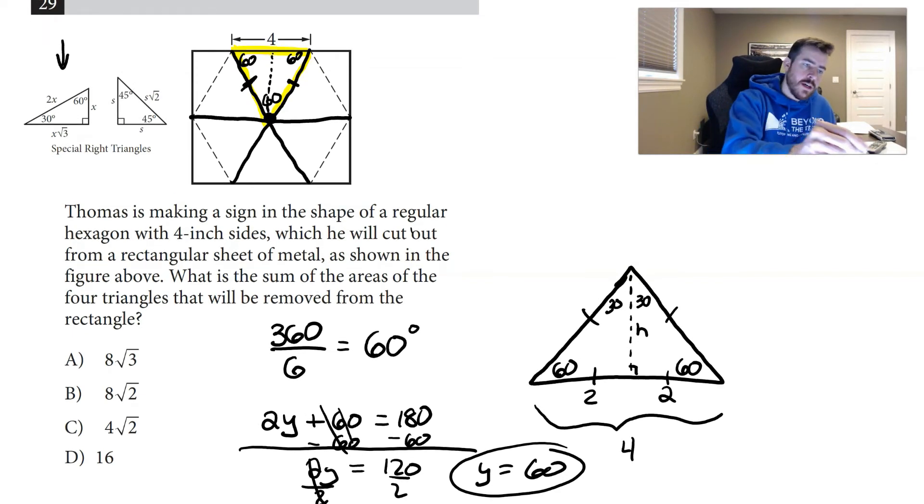For a 30-60-90 triangle, across from the 30 degrees is X, so across from 30 we would consider this to be X. The hypotenuse is twice X, so the hypotenuse would be 4. Across from the 60 is X√3, so if X is 2 here, then our H would be 2√3.